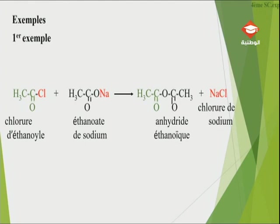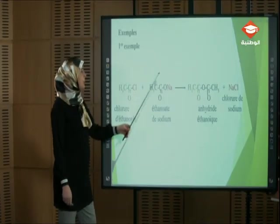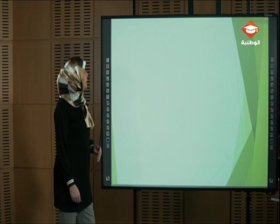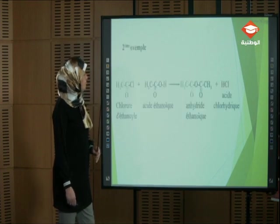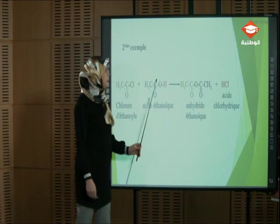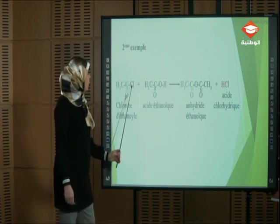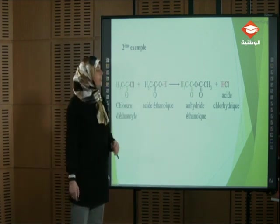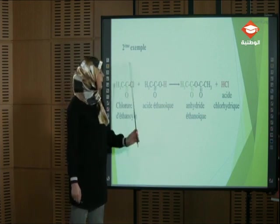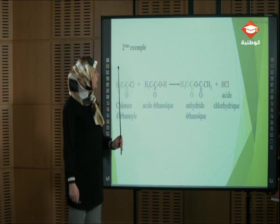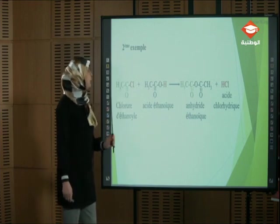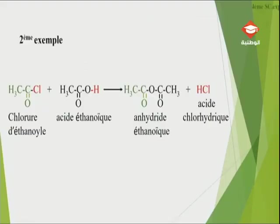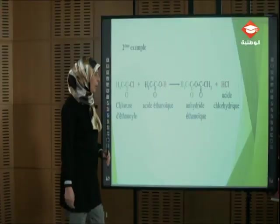Deuxième exemple : on remplace l'éthanoate de sodium par un acide carboxylique. L'acide participe par son hydrogène, le chlorure d'éthanoïl par son chlore, formant l'acide chlorhydrique. L'oxygène et le carbone qui manquent une liaison vont s'associer ensemble pour donner l'anhydride éthanoïque.